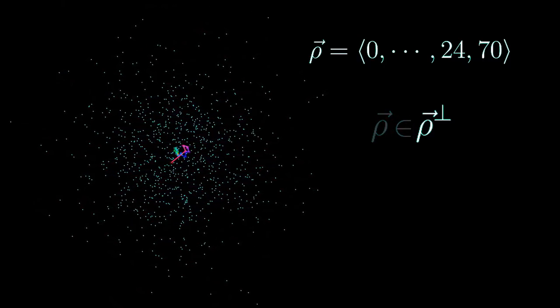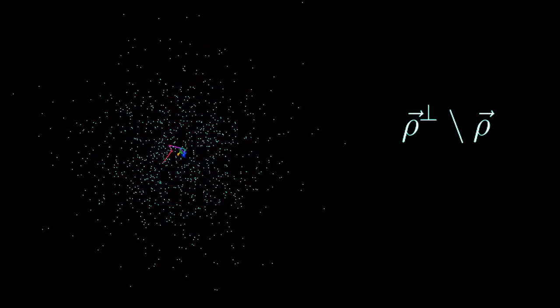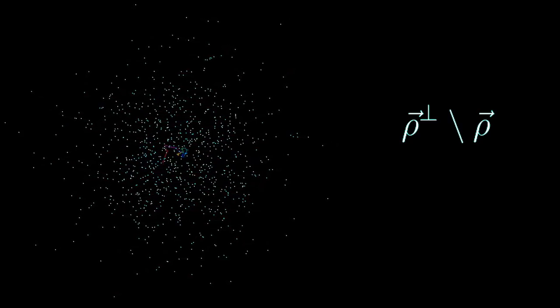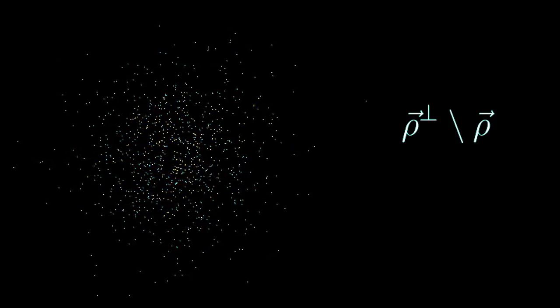So we can take this 25-dimensional lattice and just kill off all copies of rho. And this now has dimension 24. So we've got a 24-dimensional lattice. And this lattice here is not the Leach lattice.